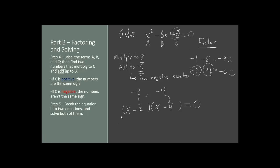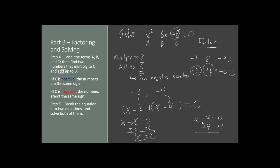That brings us to step 5. Now that we have our two parentheses equaling 0, we break this equation apart into two smaller equations: x minus 2 equals 0, and x minus 4 equals 0. For the first one, we add 2 to both sides, the 2s cancel out, and our solution is x equals 2. For the other equation, we add 4 to both sides, the negative 4 and positive 4 cancel out, giving us x equals 4. This is what should happen in a quadratic equation — you end up with two solutions.